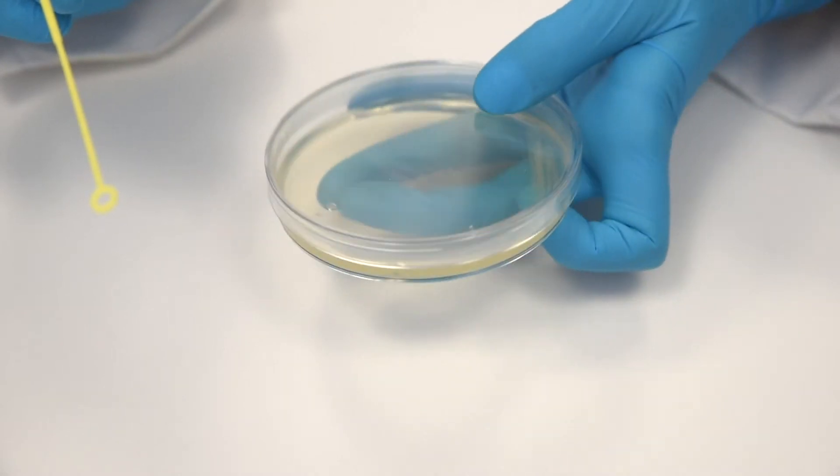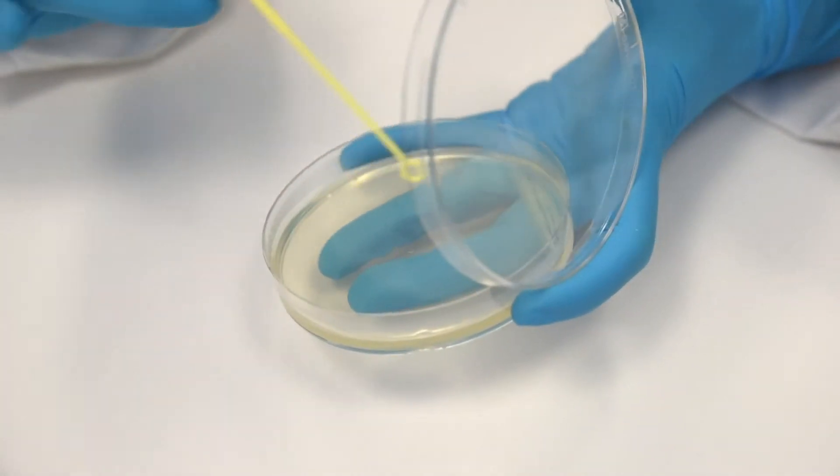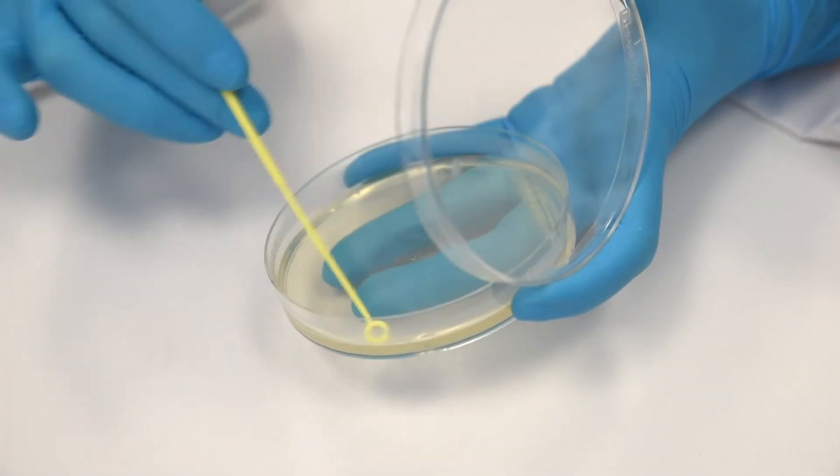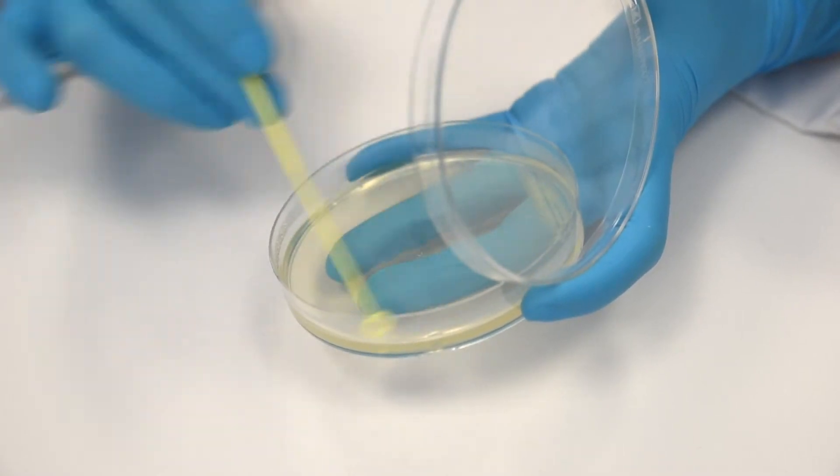Step 4: With the same loop, streak through the primary streak to a clean part of the agar several times to create a secondary streak.